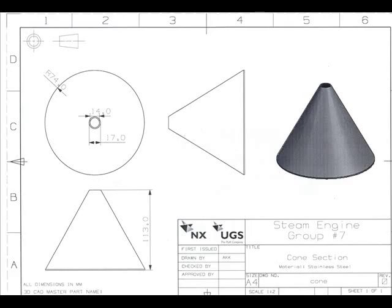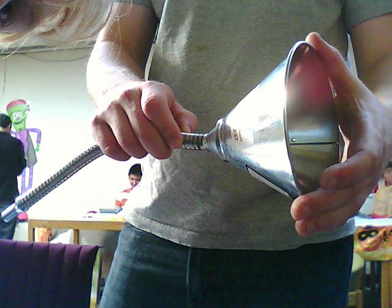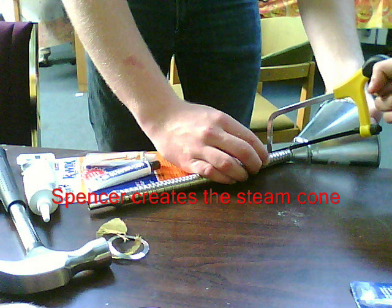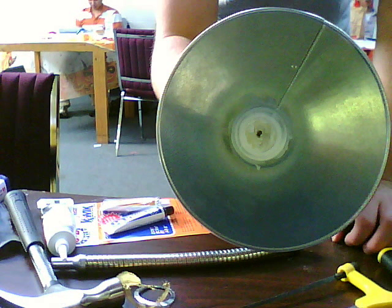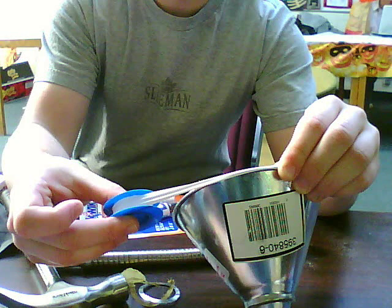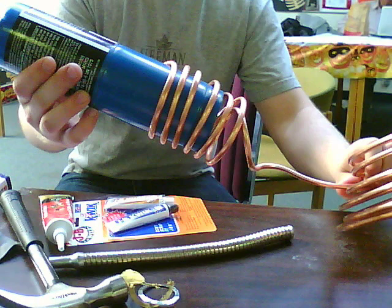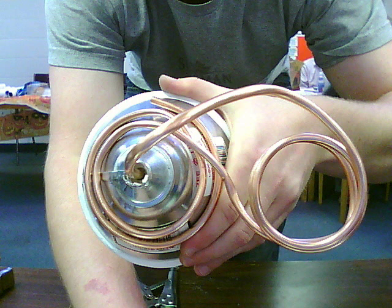For the waste heat capture stage of the cogeneration system, we had to channel the steam after it had passed through the turbine through a condenser in order to extract heat from it. A basic solution was to use a cone to channel the steam up into a coil arrangement. We used copper tubing for its superior heat conductivity.